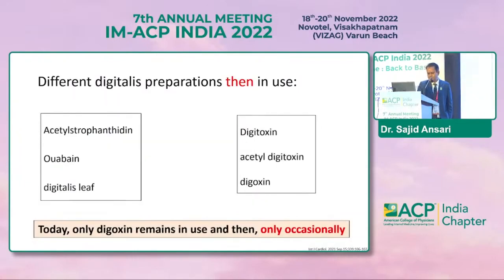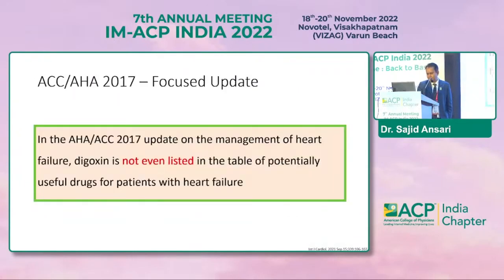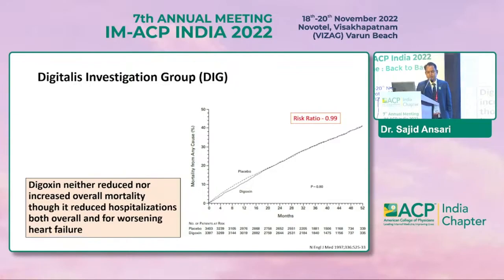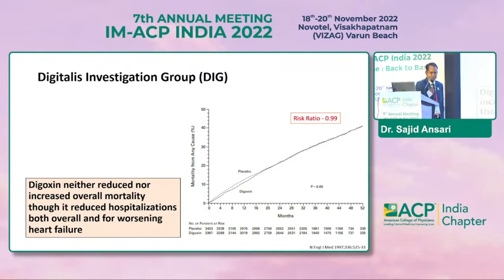Regarding the current status from ESC and AHA, the DIG study — Digitalis Investigation Group — found that digoxin neither reduced nor increased overall mortality, though it reduced hospitalization both overall and for worsening heart failure. So concern is always there, and right now while managing HFrEF patients we have a group of drugs, but the question remains: how to reduce recurrent hospitalization?